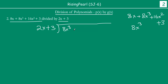So you have to arrange the terms such that the term with the highest power comes first, followed by the next lower degree, and so on, with the lowest power at the rightmost position. The correct arrangement is: 8x³ + 16x² + 8x + 3. This is very important, friends, before you start the division process. After we have written this, let us go ahead with the division.